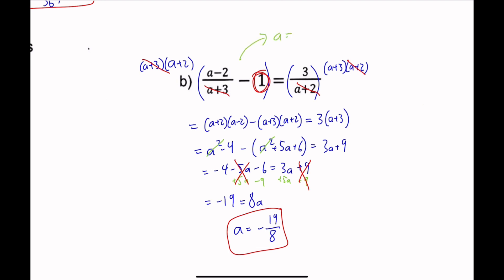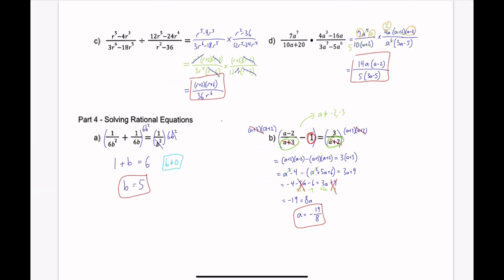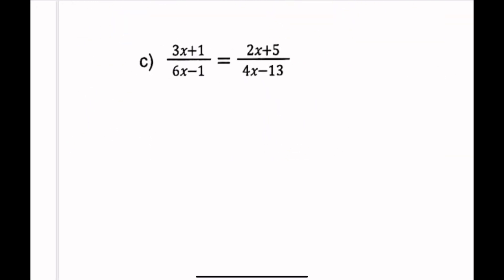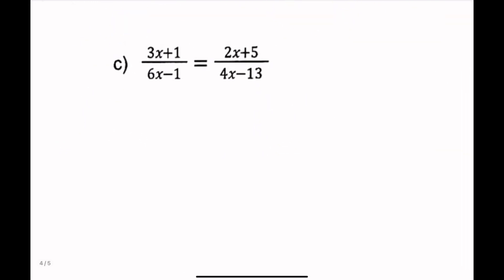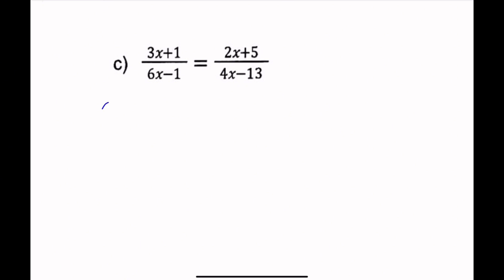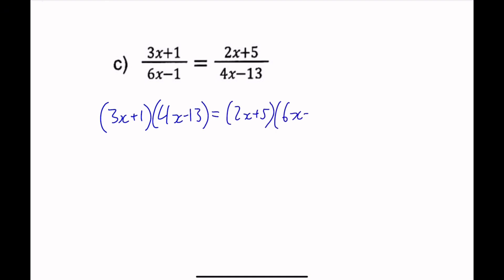For this one, a cannot be negative 2 or negative 3, because those are both in the denominator. For number c, we can just cross-multiply and get it over with, because these two multiplied equals these two multiplied. So let's expand: (3x+1)(4x-13) equals (2x+5)(6x-1).